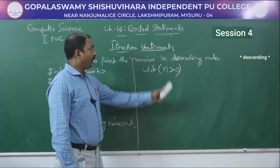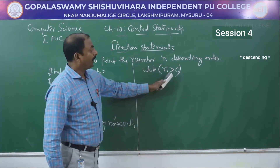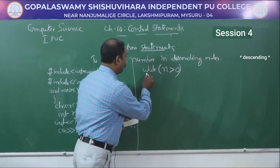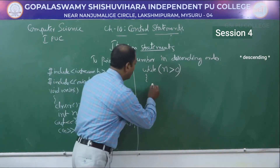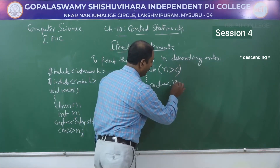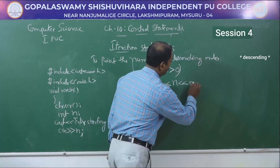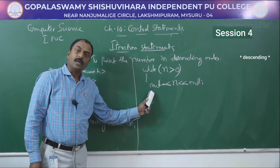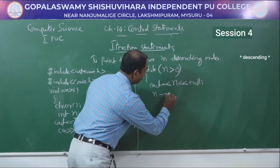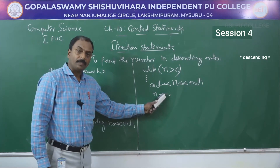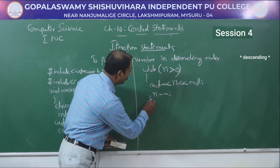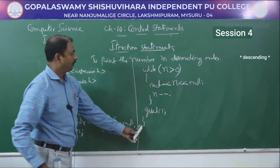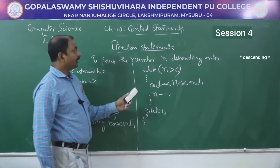While N is greater than 0, we print numbers in descending order from the starting number down to 0. Inside the loop: cout << N; then the decrement statement N-- (minus-minus is decrement operator). After the loop closes, we add getch() and close the void main function.